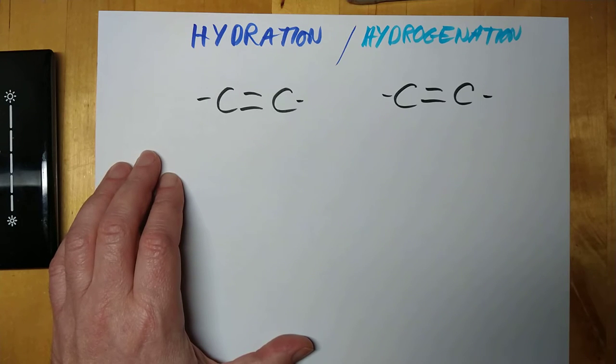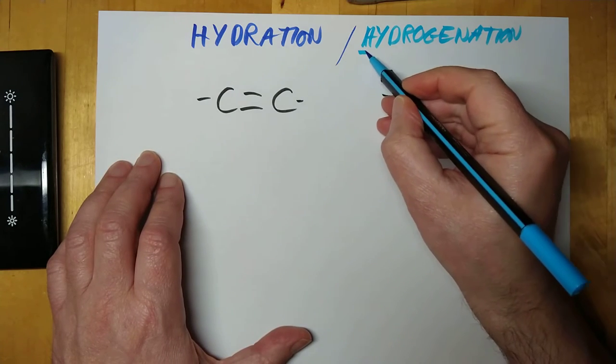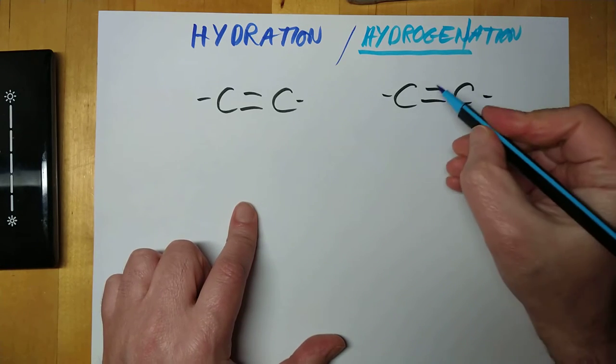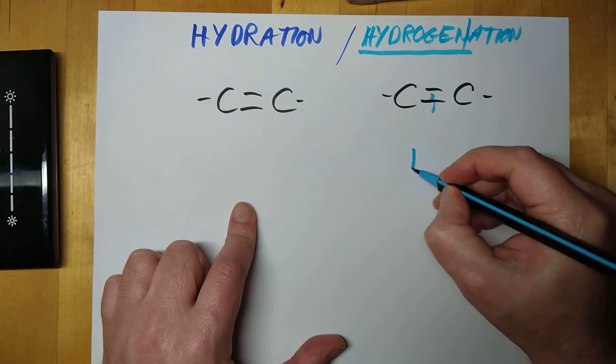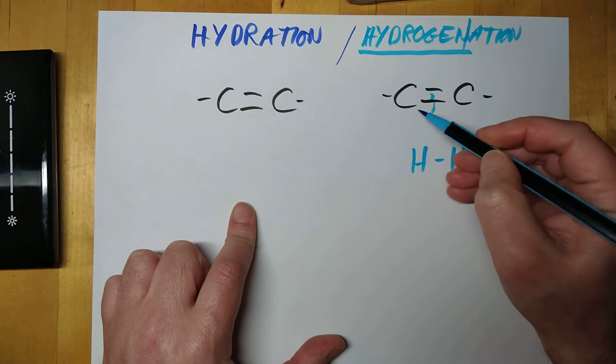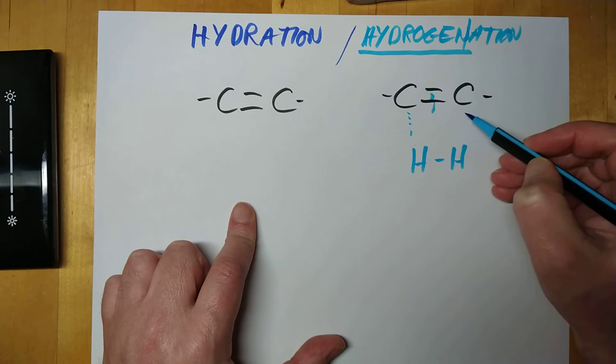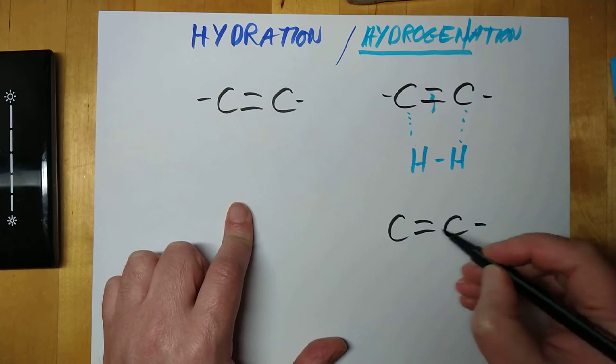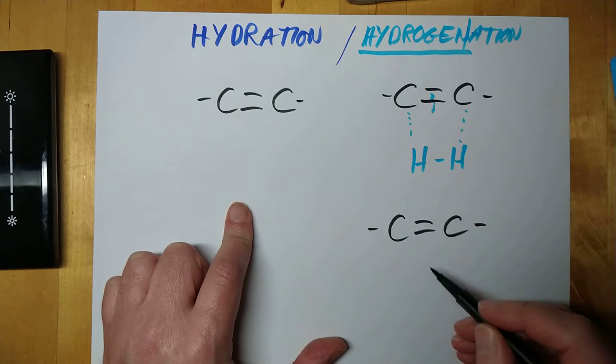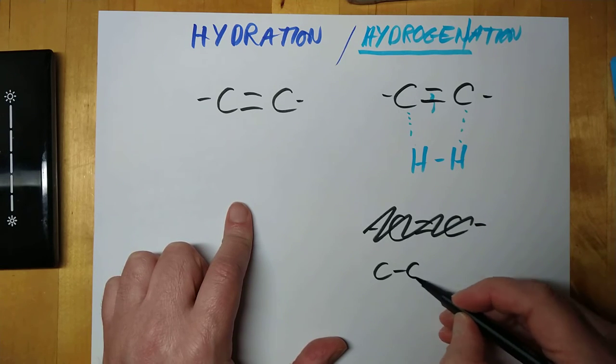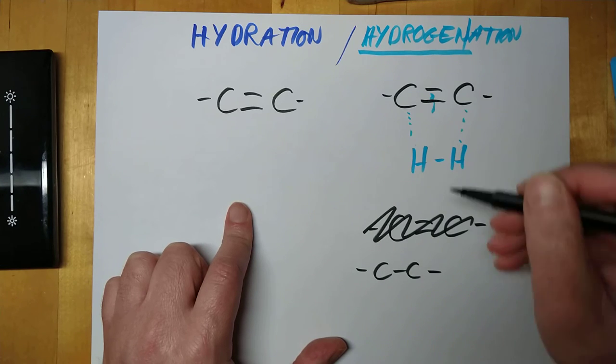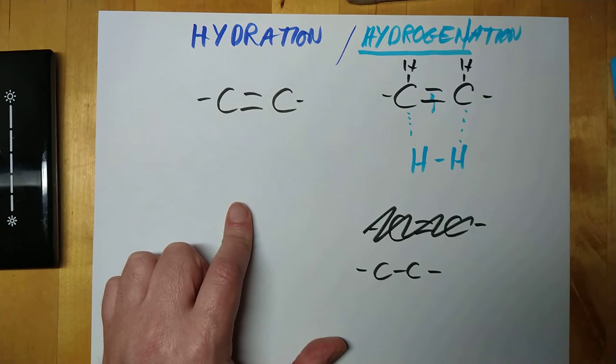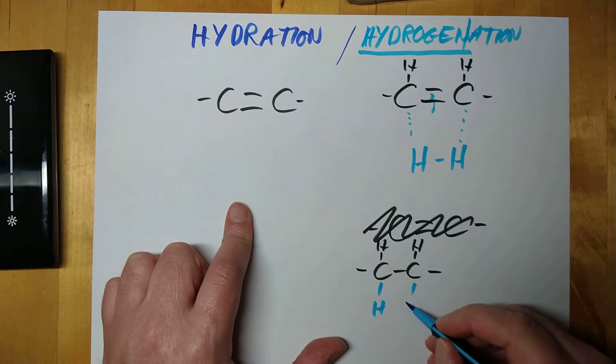Or hydrogenation. Now, addition reactions were introduced to us all the way back in National 5. And basically what you need is you need to have a double bond between some carbons. And you are going to split one of these bonds. So you're going to break one of them. And in the case of hydrogenation, which is the easiest one, we're going to add hydrogen to this.